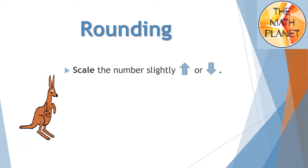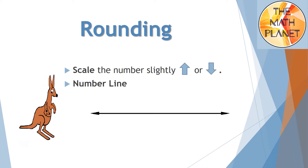In rounding, we scale the numbers slightly up or down, so we don't get an exact or accurate measure — we get an estimate. Today we will use the number line for rounding. On the number line, we often have lesser numbers to the left side and greater numbers to the right side, and we will also have three benchmarks on the number line.